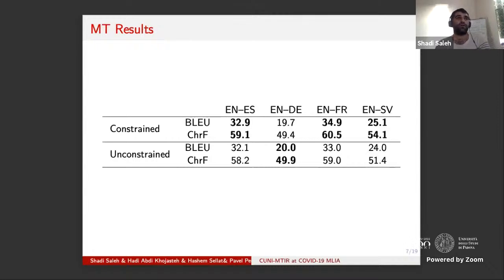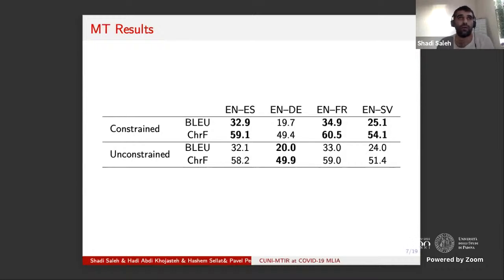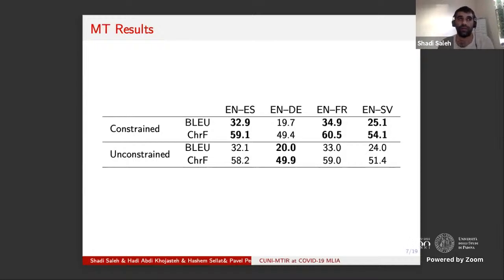These are our MT results — constrained and unconstrained. Surprisingly, the constrained system outperformed our unconstrained system, except for English-German. We have a few possible explanations: the 10 million sentences we selected may contain some noise, like bad or wrong translations. Also, the constraint data is very domain-specific. The corpus we used is from the medical domain, but multiple synonyms and expressions appeared newly with the COVID pandemic, which could be a factor.